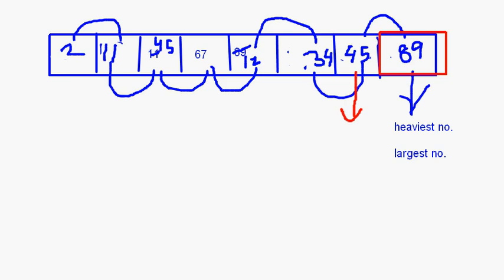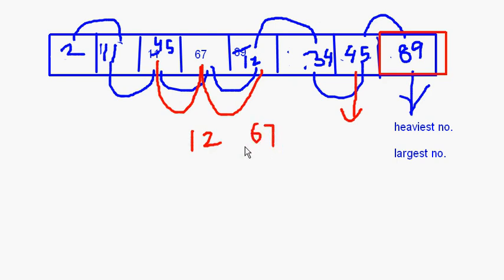In the next loop, 2 and 11 will be compared — 2 is less than 11, so nothing happens. 11 and 45 — 11 is less than 45, nothing will happen. 45 and 67 — 45 is less, nothing to be done. Then 67 and 12: 12 and 67 will swap, so you get 2, 11, 45, 12, and 67.